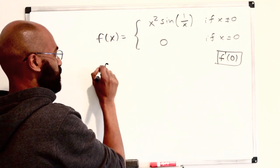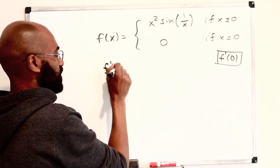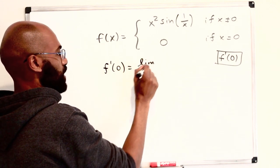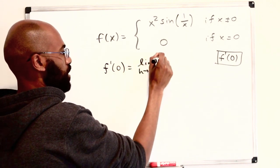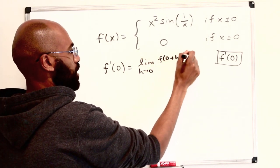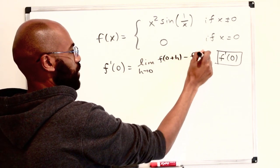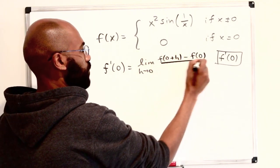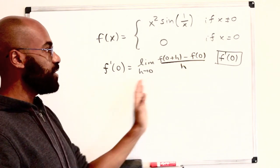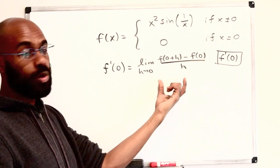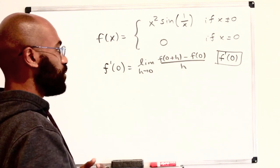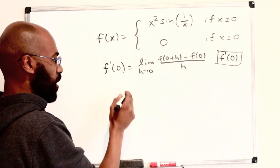The limit definition for the derivative at zero is the limit as h approaches zero of f at zero plus h minus f of zero, all over h. Before diving into the computation, I want to remind ourselves where this comes from.